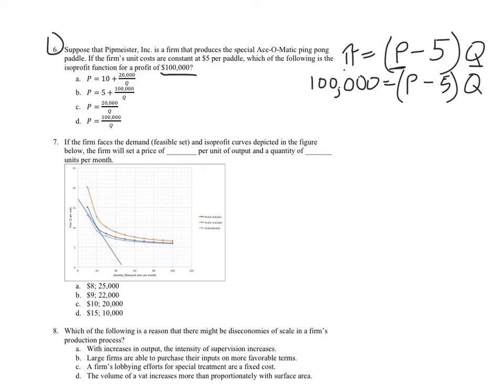All right, well now we're in business, because we've got an expression just in terms of p and q, so now our task is to isolate price. Remember, we've got price as the y-axis variable, quantity as the x-axis. So let's divide both sides by q. And of course these q's cancel, and we're left with p minus 5 is equal to 100,000 divided by q. We can add 5 to both sides, and we get p equals 5 plus 100,000 over q. And that makes b the right answer.